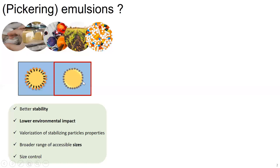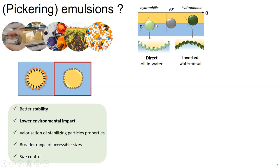These particles are very important to choose because their nature will impact the nature of the emulsion. If the particle is hydrophilic, meaning it is wetted by the aqueous phase, it will lead to a direct emulsion — an oil droplet stabilized into an aqueous medium. On the contrary, if the particle is hydrophobic, wetted by the organic phase, then you will have an inverted emulsion, which is a water droplet stabilized into an organic medium.